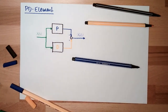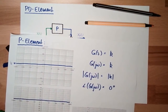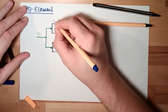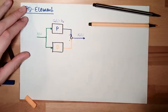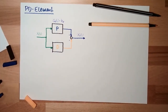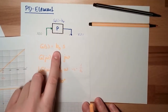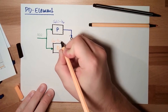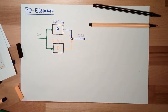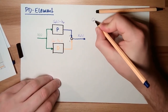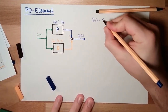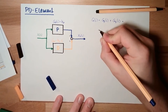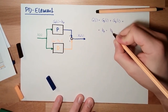Let's remember the transfer functions. The transfer function for the P element is just K, so Gp is Kp. And the transfer function of the D element, we had it also in the last video, is Kd multiplied by s. So Gd is Kd multiplied by s. The total transfer function G(s) equals Gp(s) plus Gd(s), and this is Kp plus Kd multiplied by s.